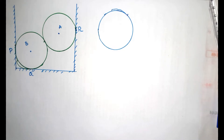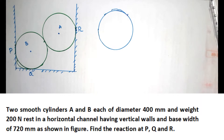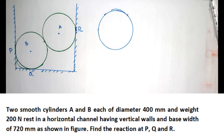The next problem is that we have two smooth cylinders A and B, each of diameter 400 mm and weight 200 N, resting in a horizontal channel having vertical walls and a base width of 720 mm as shown in the figure. Find the reactions at B, Q, and R.